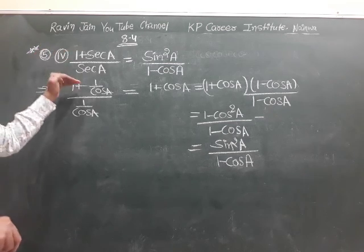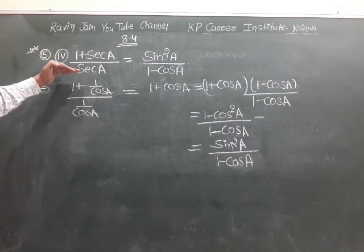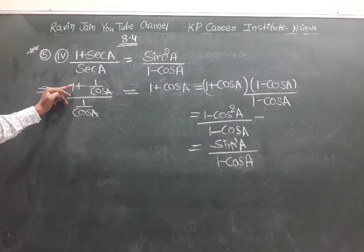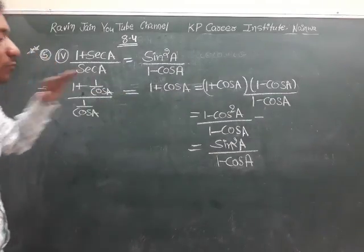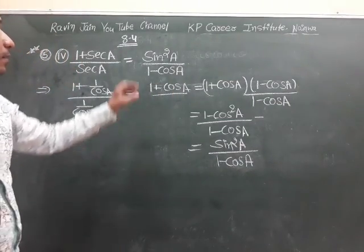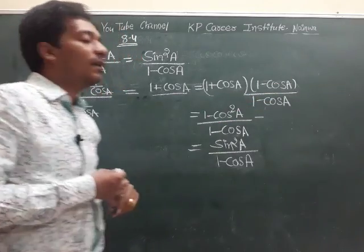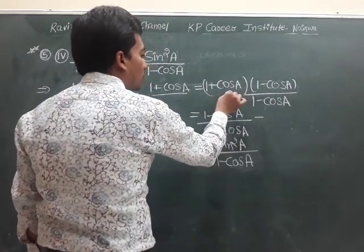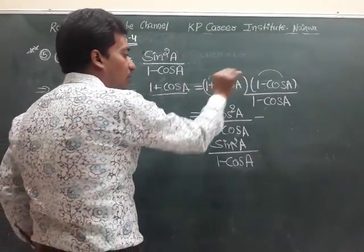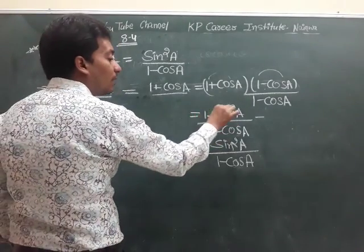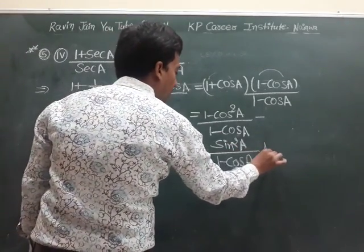In the 4th part, we need to prove that (1 + sec A)/sec A = sin²A/(1 - cos A). Sec A = 1/cos A, so the LHS becomes (cos A + 1)/cos A divided by 1/cos A. The cos A cancels, leaving (1 + cos A). Multiplying and dividing by (1 - cos A), we get (1 + cos A)(1 - cos A)/(1 - cos A) = (1 - cos²A)/(1 - cos A) = sin²A/(1 - cos A). Hence proved.